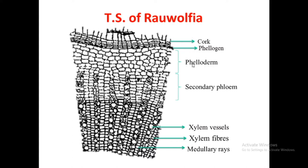The phelloderm contains 10 to 12 rows of elongated parallel parenchymatous cells. This phelloderm contains few starch grains and calcium oxalate crystals. Next, the secondary phloem — this secondary phloem is unlignified, containing unlignified cells.